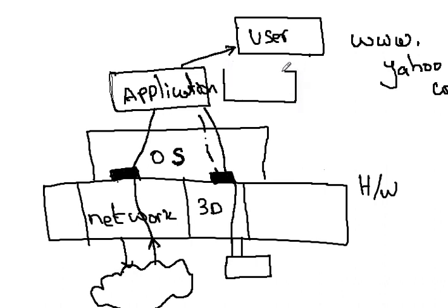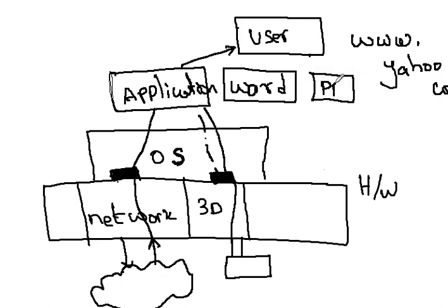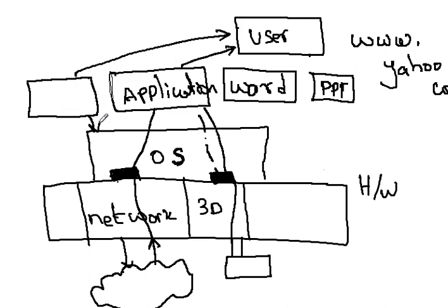So this is how you write an application. There are a lot of applications in the market. They all stay in between the operating system and the user. You have Microsoft Word, which we all use for writing documents and reports. We have PowerPoint. All these are called applications — they reside between the operating system and the user. We also have email, such as Outlook Exchange, which is another application that resides between the operating system and the user.